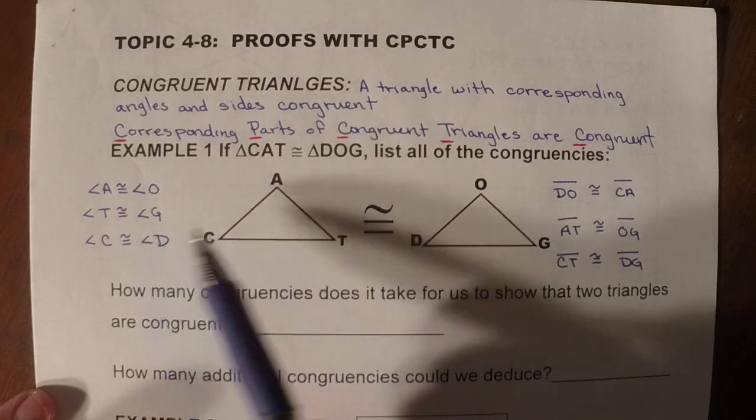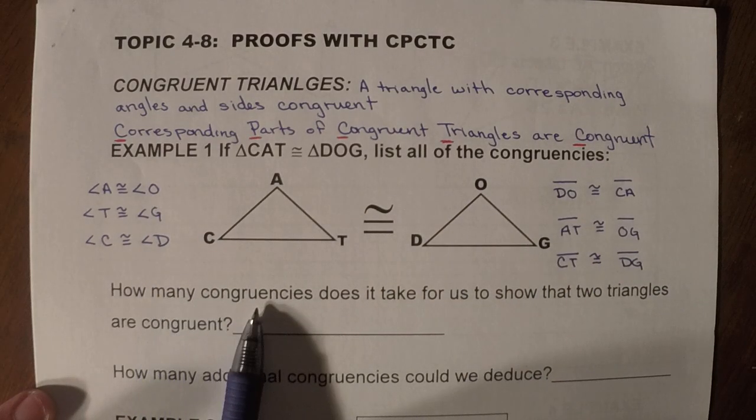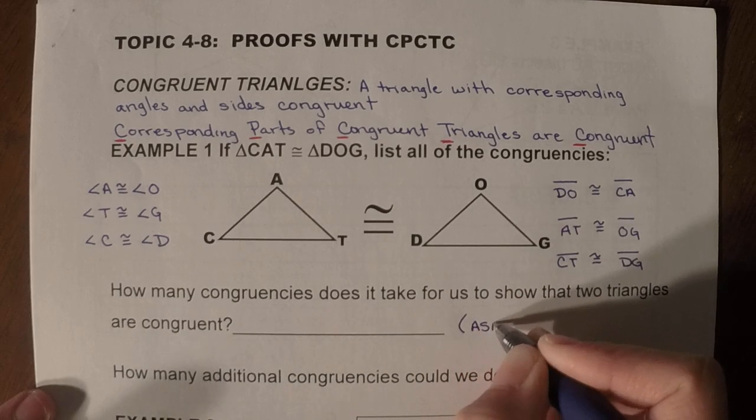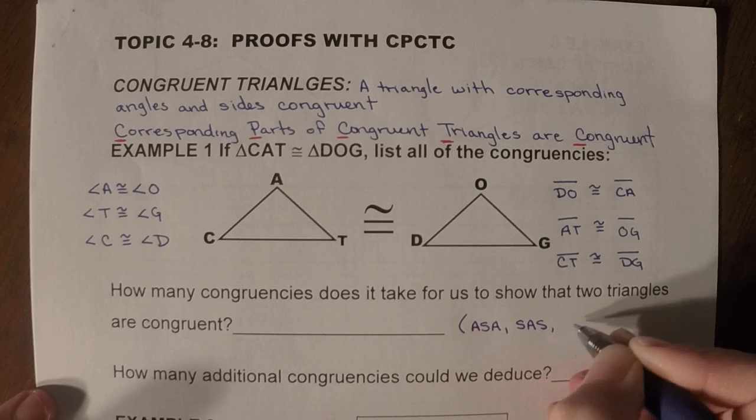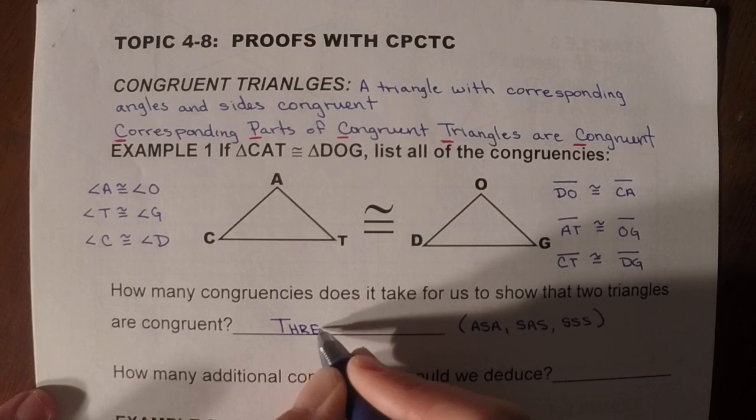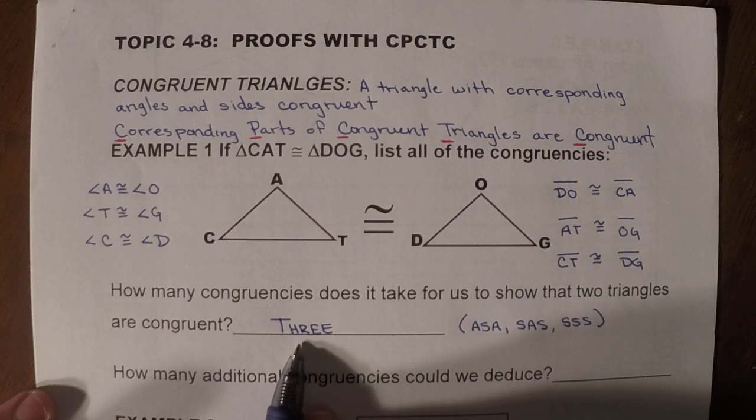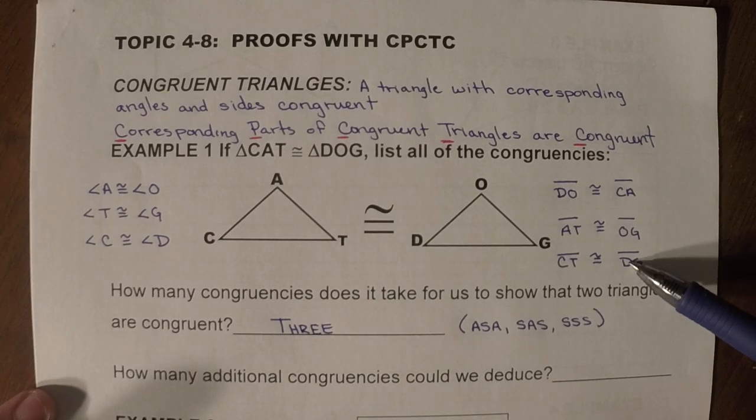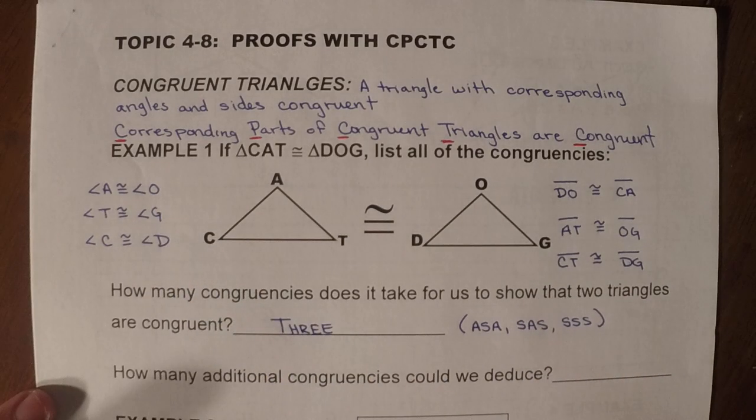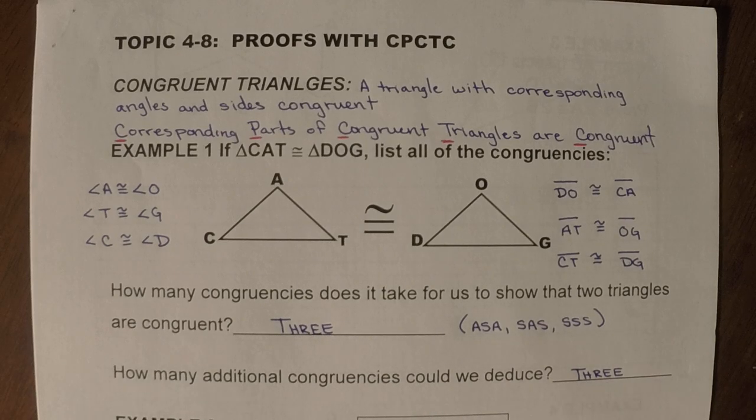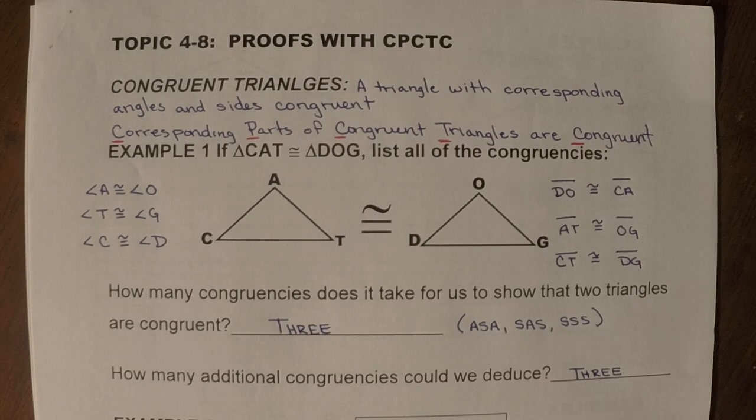So how many congruencies did we find? Well, there's six of them. But this question says, how many congruencies does it take for us to show that the two triangles are congruent? Well, if you remember, we've been working with angle side angle, side angle side, side side side. But in all these cases, it only took three to prove that they were congruent. But once I proved they were congruent, how many additional congruencies then could we figure out? So if I had side side side, I also could still prove that these three angles were congruent. So there's three extras that we could prove congruent once we know the triangles are equal.